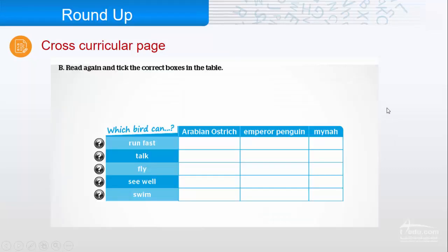Now, let's look at the table. Which bird can run fast? The Arabian ostrich. Which bird can talk? The minor bird. Which bird can fly? The minor bird. Which bird can see well? The Arabian ostrich. Which bird can swim? The emperor penguin.